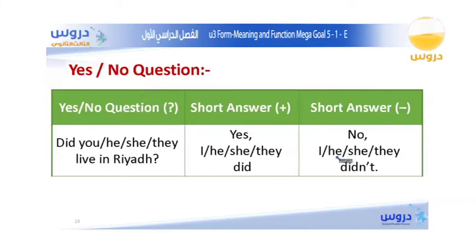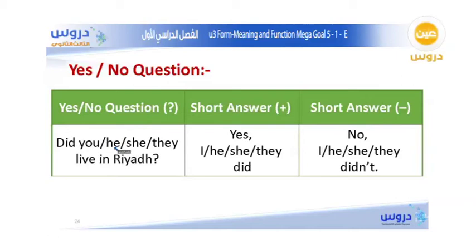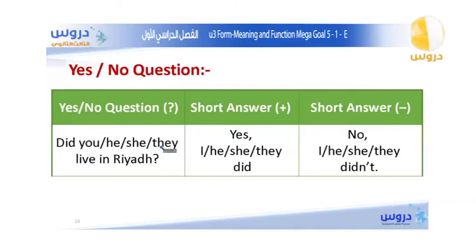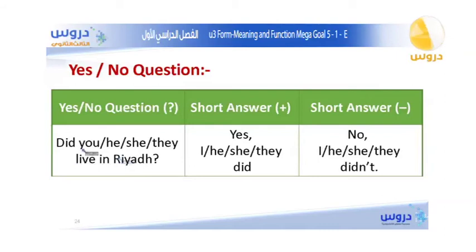In the simple present, yes or no questions use do or does. But in the simple past, we only use did — with any subject. The verb that comes after did must be in the base form. For example: Did you live in Riyadh? — Yes, I did. Or in the negative: No, I did not.